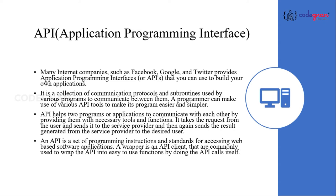If they provide an API and you can access it, you can use that data. Even WhatsApp Business works this way — if you book tickets through BookMyShow using Razorpay, they contact you through WhatsApp telling you your movie time. You may have experienced that. It's all with the help of APIs.